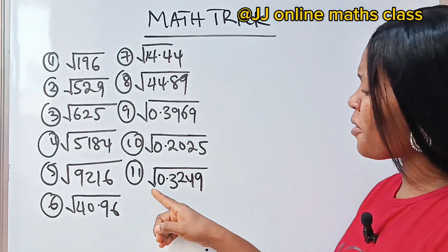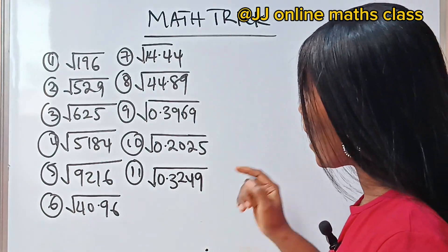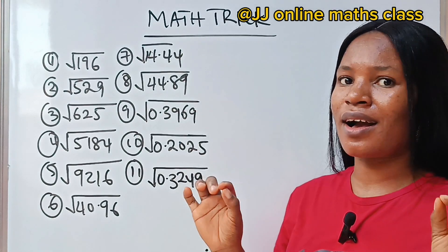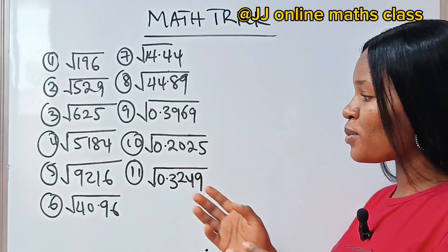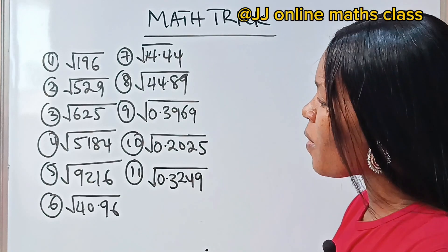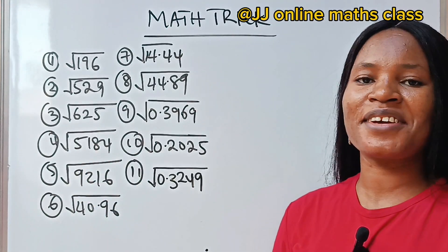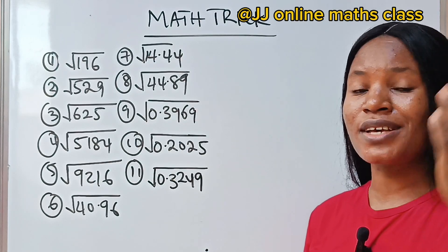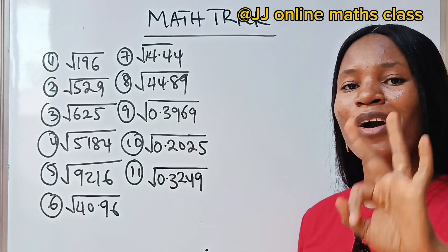If you are asked to find the square root of 0.3249 without a calculator — or the square root of 5184 without a calculator — what will you do and how are you going to approach it, given just three seconds to do that?